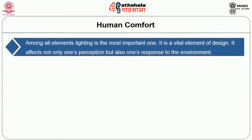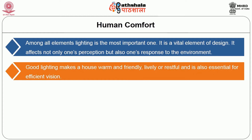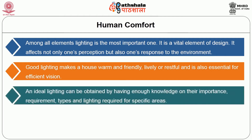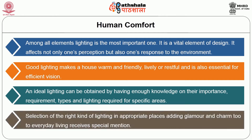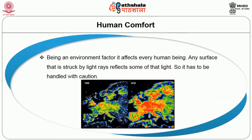Among all elements, lighting is the most important one. It is a vital element of design affecting not only one's perception but also one's response to the environment. Good lighting makes a house warm and friendly, lively or restful, and is essential for efficient vision. An ideal lighting outcome can be obtained by having enough knowledge of its importance, requirement, types, and lighting required for specific areas. Selection of the right kind of lighting in appropriate places adds glamour and charm to everyday living. Being an environmental factor, it affects every human being, and any surface struck by light rays reflects some of that light, so it must be handled with caution.